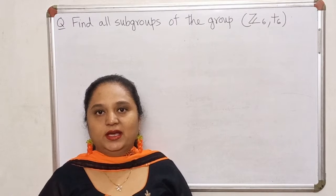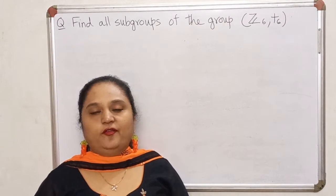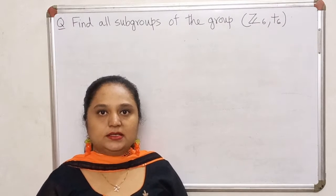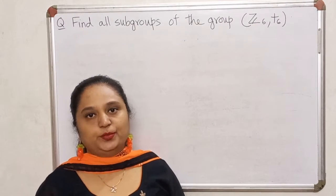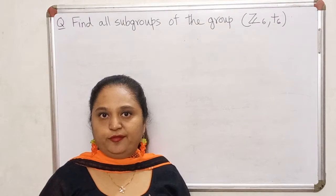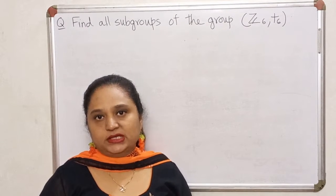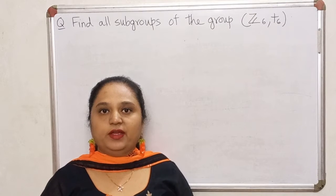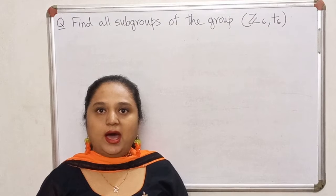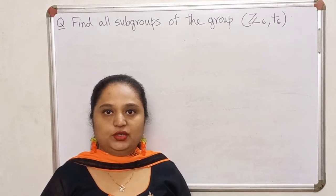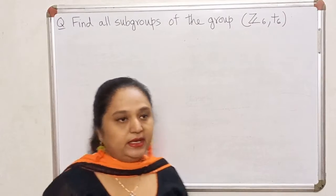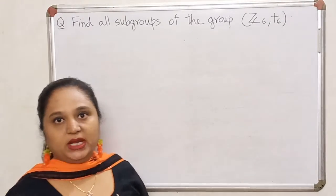Hello students. In the last lecture we have seen a necessary and sufficient condition for a finite non-empty subset to be a subgroup. We saw that closure property is enough if the subgroup is finite. Also, we have seen how to use Lagrange's theorem to narrow down our search to finding subgroups of certain orders. Let me once again explain in this example what we mean by that.